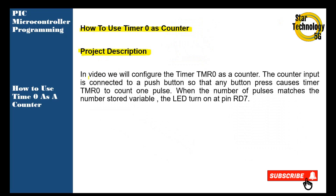Project description: in this video we will configure Timer 0 as a counter. The counter input is connected to a push button so that any button press causes Timer 0 to count one pulse. When the number of pulses matches the number stored in a variable, the LED turns on at pin RD7.